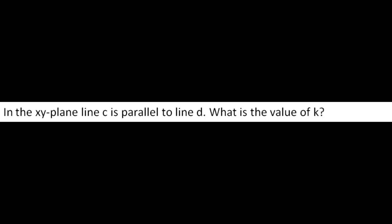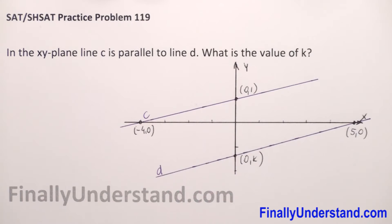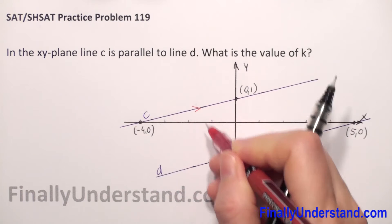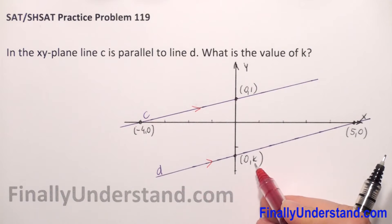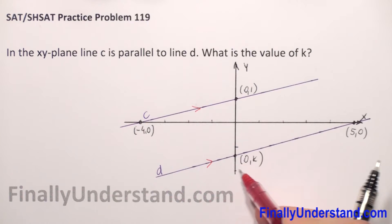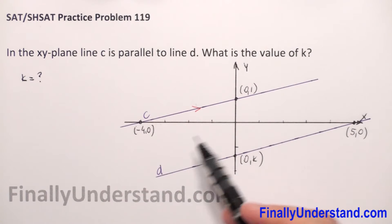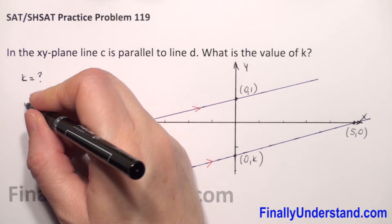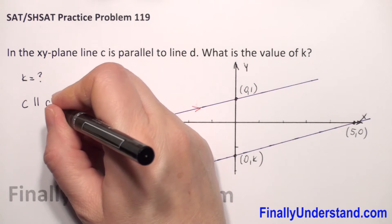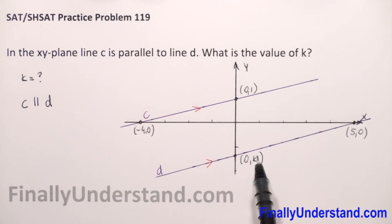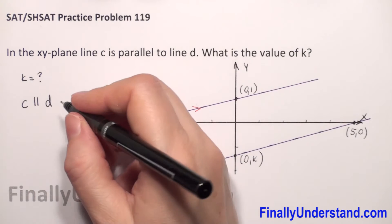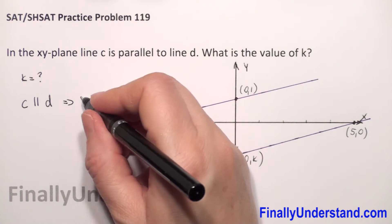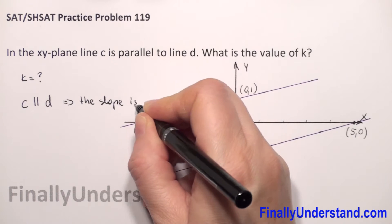In the xy plane, line C is parallel to line D. What is the value of K? K is the second coordinate of this point, so we need to find the value of K. We know that line C and D are parallel, so we can write that C is parallel to D. If these two lines are parallel, it means that the slope of these two lines are the same.